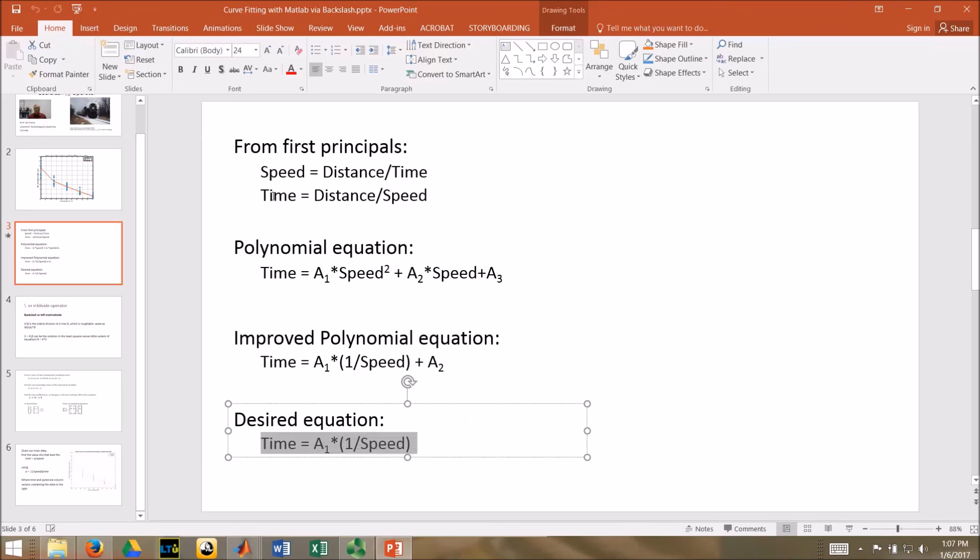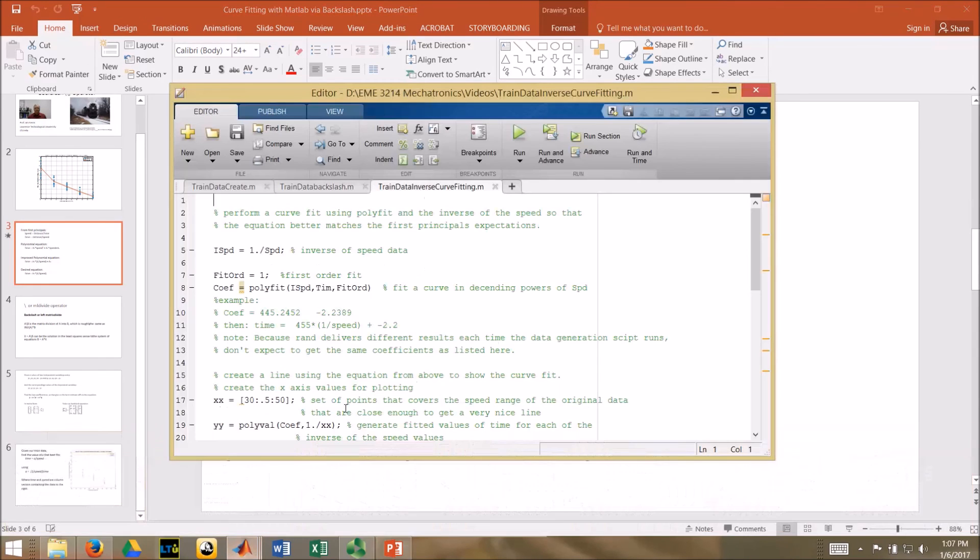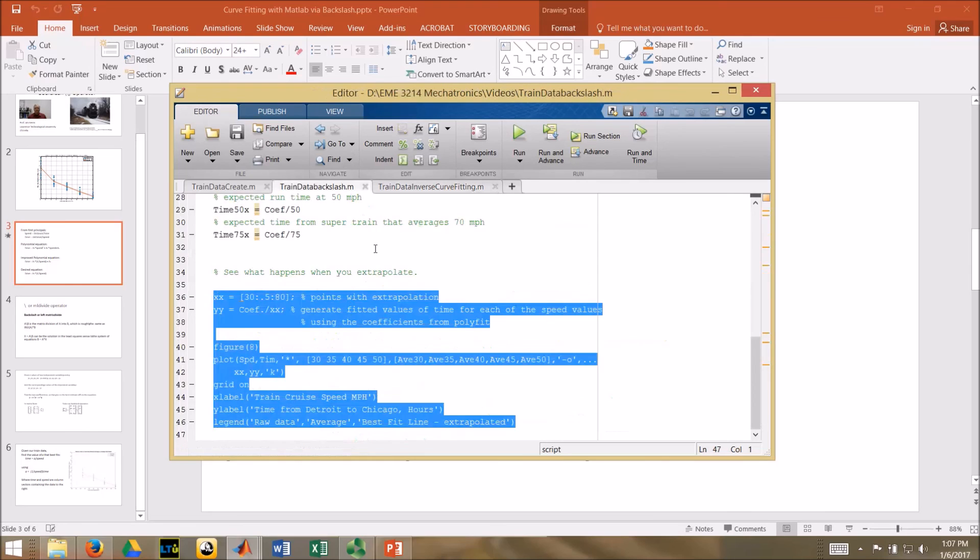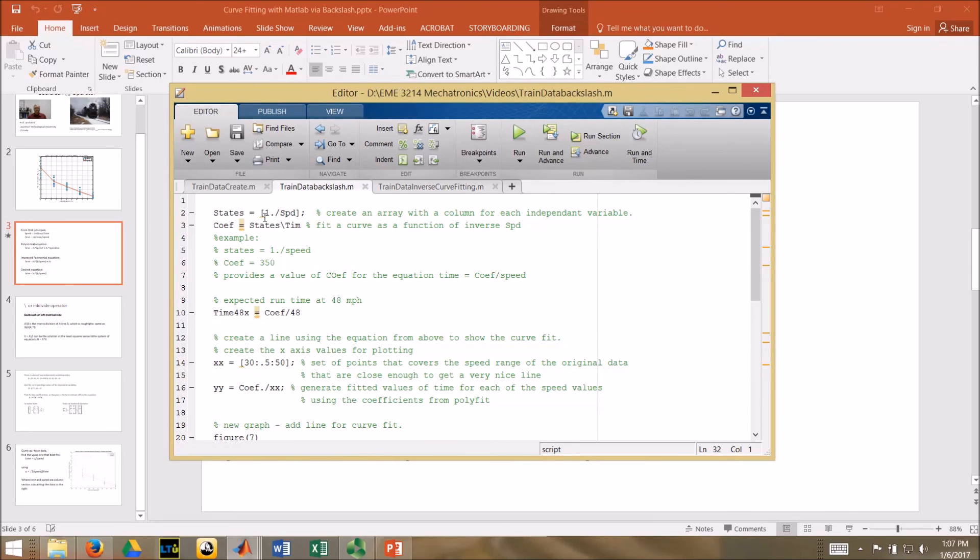Hopefully I didn't - I know I went through that fairly quickly - but once you get the idea that the backslash operator is just finding those coefficients for you and you can be pretty arbitrary about what you put in here in terms of columns of independent variables, so you can do some pretty wacky things.